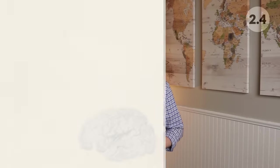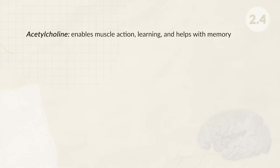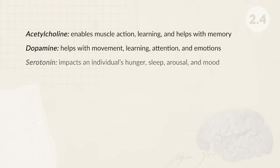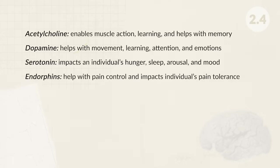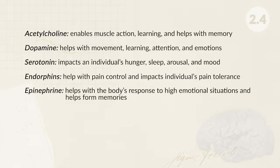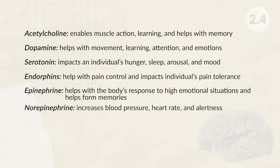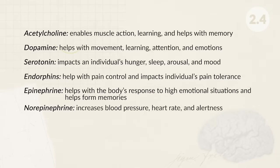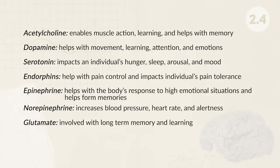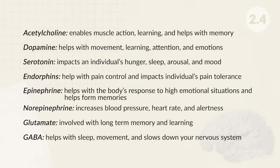It's important that you remember the different types of neurotransmitters and what they do to the body. Acetylcholine enables muscle action, learning, and helps with memory. Dopamine helps with movement, learning, attention, and emotion. Serotonin impacts an individual's hunger, sleep, arousal, and mood. Endorphins help with pain control and impact an individual's pain tolerance. Epinephrine helps with the body's response to high emotional situations and helps form memory, while norepinephrine increases blood pressure, heart rate, and alertness. Both epinephrine and norepinephrine work together with the body's fight or flight response. Glutamate is involved with long-term memory and learning. Lastly, GABA helps with sleep and movement and slows down your nervous system.